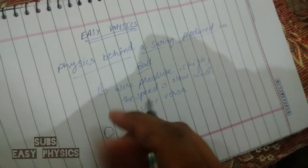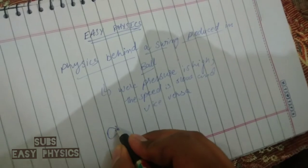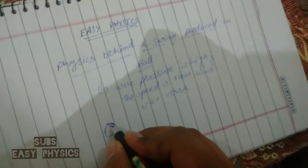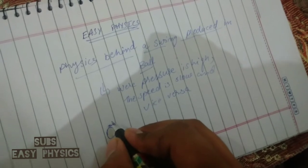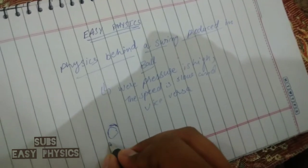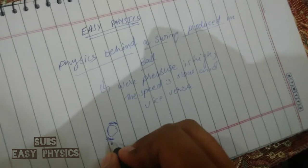The speed of the air on the upper or shining surface of the ball is higher, so the pressure over there is low. Whereas the speed of the air on the low side of the ball, or the rough side, is lower.